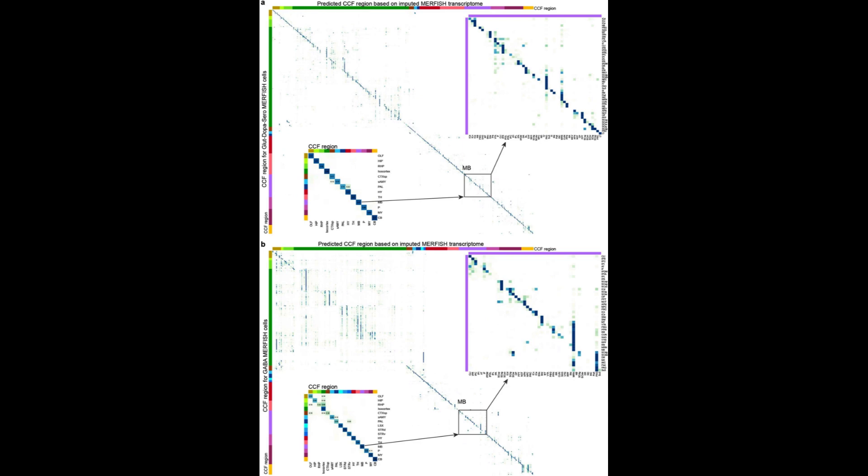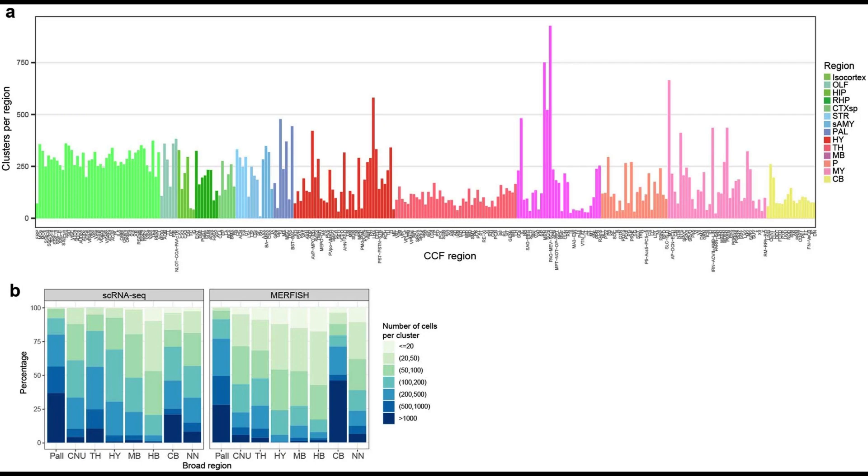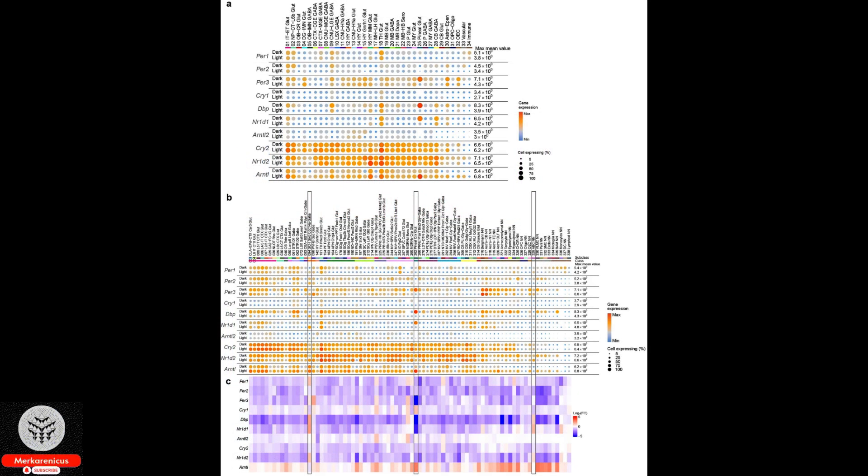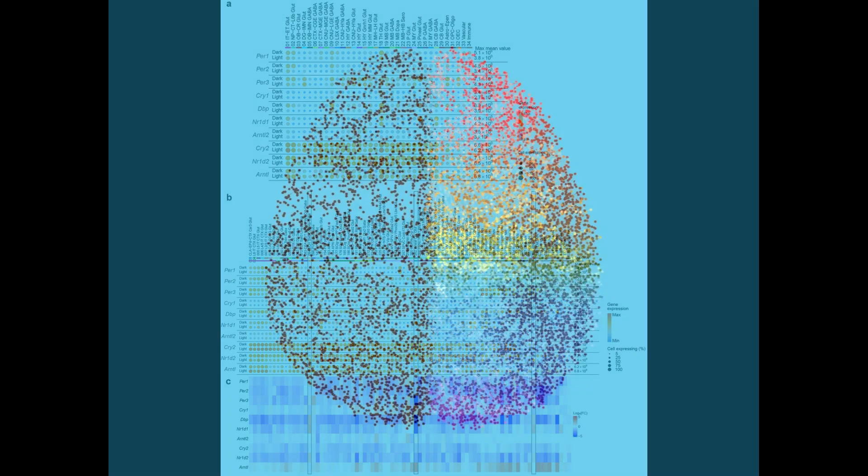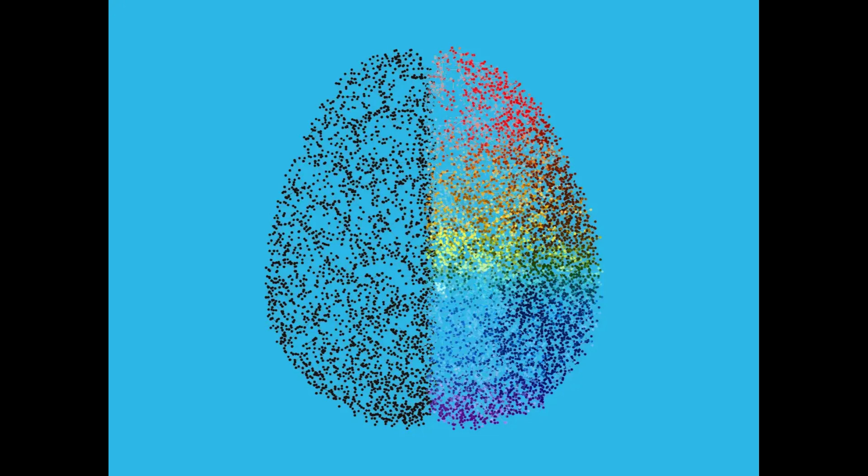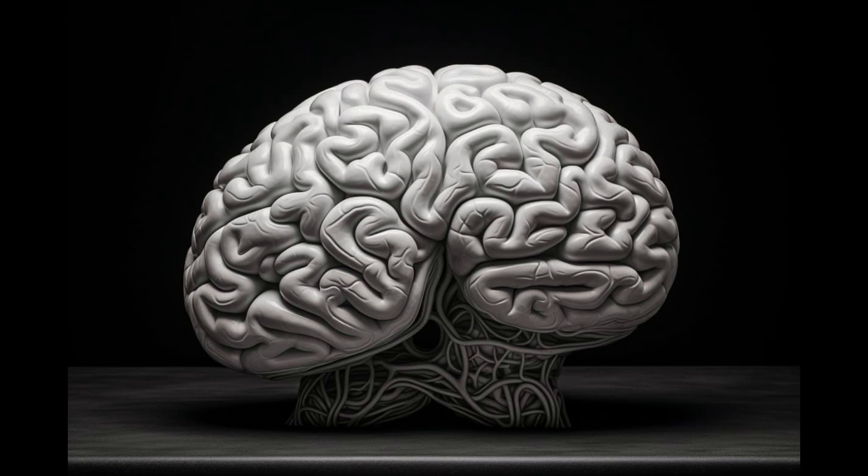This cell atlas lays the crucial groundwork for the development of cutting-edge precision therapeutics aimed at treating individuals afflicted by various mental and neurological disorders affecting the brain. The research, which was financially supported by the National Institutes of Health's Brain Initiative, has resulted in a series of 10 papers published in the prestigious journal Nature.